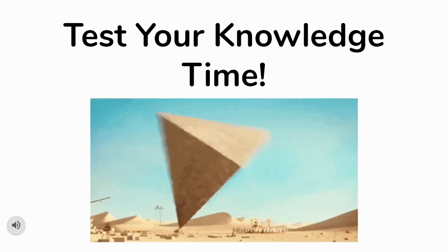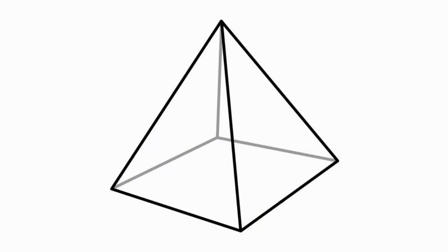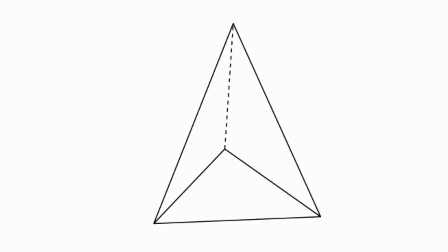Time to test your knowledge with pyramids. What is the name of this pyramid? If you look at the base, the shape is a square — this is a square pyramid. How many faces does a square pyramid have? Since a square is a quadrilateral with four sides, a square pyramid has four faces. What is the name of this next pyramid? It's a triangular pyramid — the base is a triangle, so it has three faces, which are also made out of triangles.